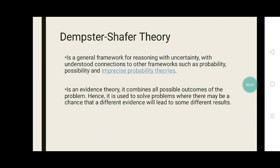Dempster Shafer Theory is a general framework for reasoning with uncertainty, with understood connections to other frameworks such as probability, possibility, and imprecise probability theories. As an evidence theory, it combines all possible outcomes of the problem. Hence, it is used to solve problems where there may be a chance that different evidence will lead to some different results.